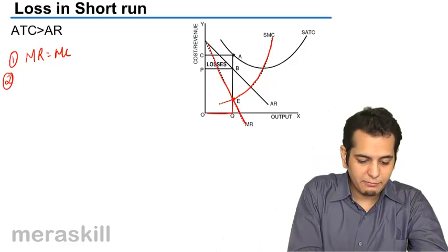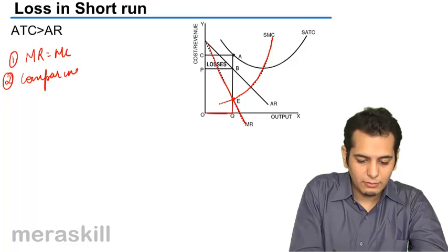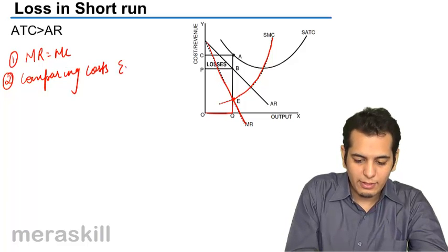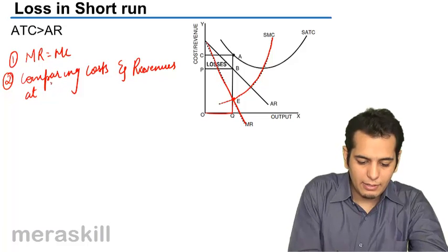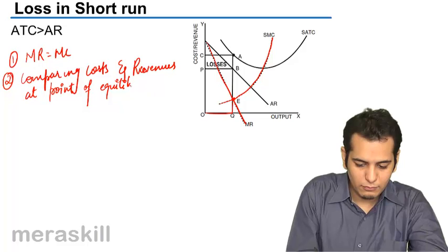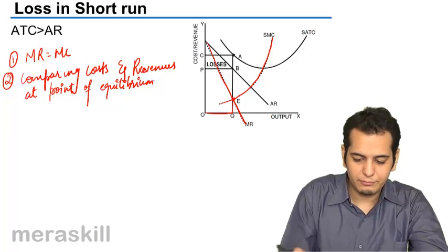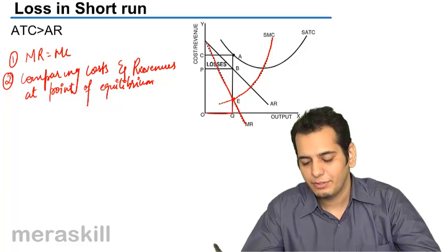Now the second step is comparing costs and revenues at the point of equilibrium. So at the point of equilibrium, I will compare the costs and revenues.